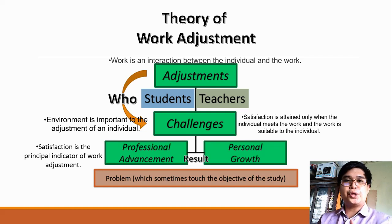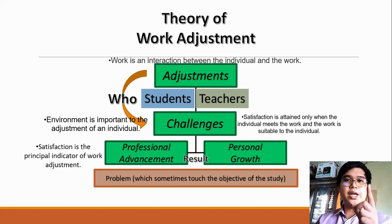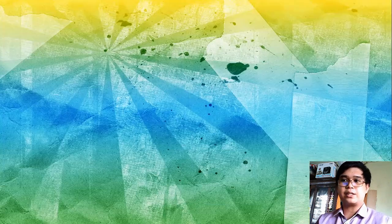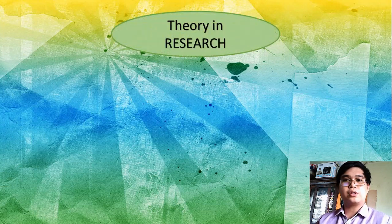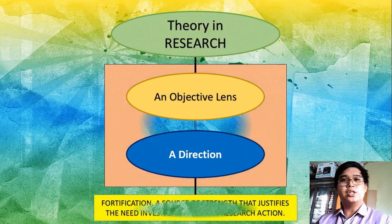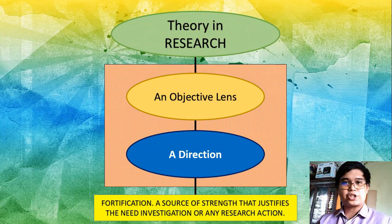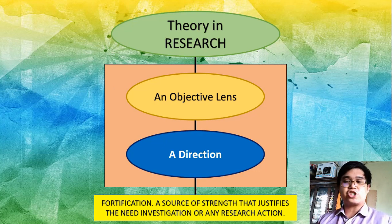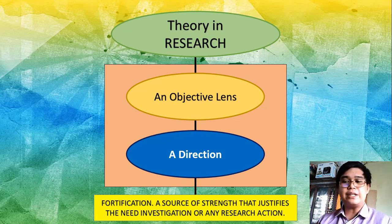Theory should be operational all throughout our study, because theory will allow us to see problems in a different perspective, in a more objective perspective. In conclusion, theory in research serves as an objective lens and as a direction. Aside from that, it is a fortification — like a fortress, it strengthens and justifies our need for investigation or any research action.